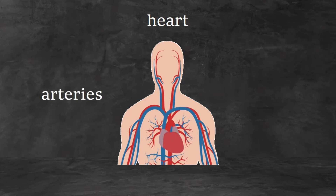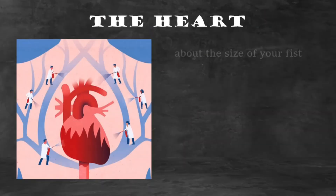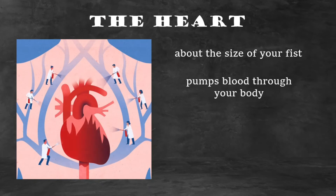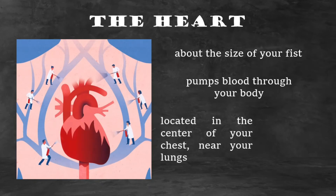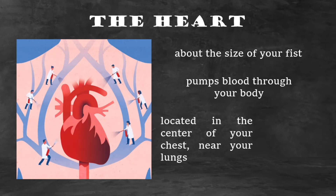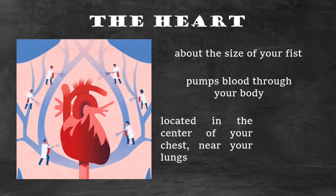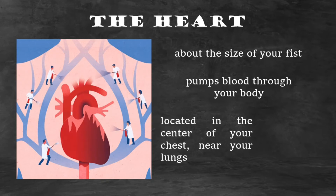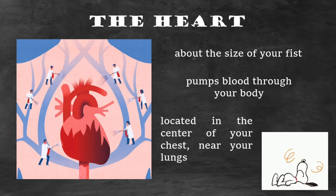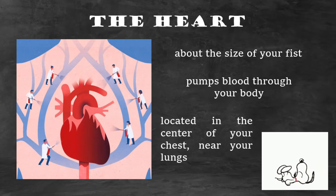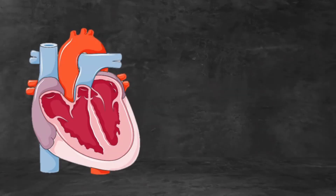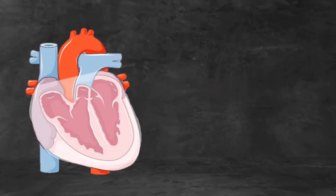The cardiovascular system consists of the heart and a closed system of vessels called arteries, veins, and capillaries. The heart is an organ about the size of your fist that pumps blood through your body. It is in the center of your chest, near your lungs. Its function is vital because to survive, the tissues need a continuous supply of oxygen and nutrients, and metabolic waste products have to be removed. Deprived of these necessities, cells soon undergo irreversible changes that lead to death.